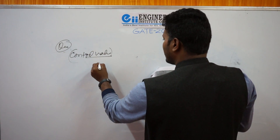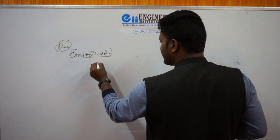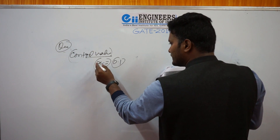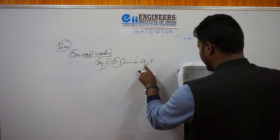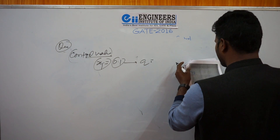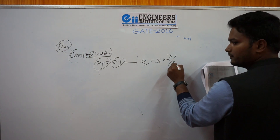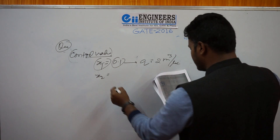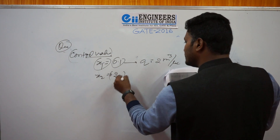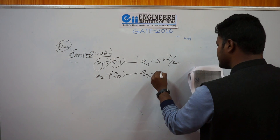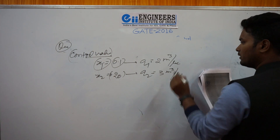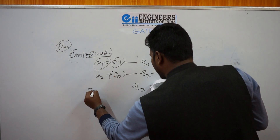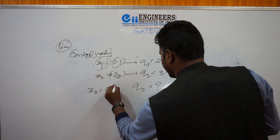In the problem they have given a 14% change in stem position. The value of x1 is 0.1, and at x1 equals 0.1 the flow rate q1 is 0.2. Then q2, the flow rate, has increased to 3 meter cube per second at x2 equals 0.2. They have asked: what is the value of q3 when the valve has opened up to 50%, meaning x3 equals 0.5? This is an equal percentage type control valve.